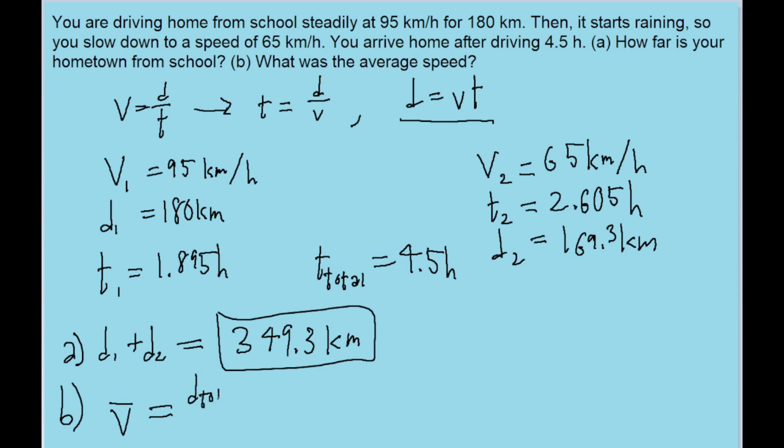So in actuality we should just use the standard definition for average speed: the total distance, d tot, divided by the total time. And as we established in part a, the total distance is about 349.3 kilometers and the total time is given to us as 4.5 hours. So putting this into our calculator, we find an average speed of about 77.62 kilometers per hour, and that is the average speed.